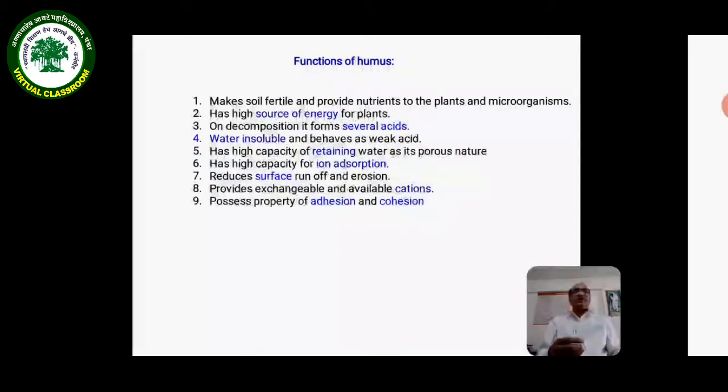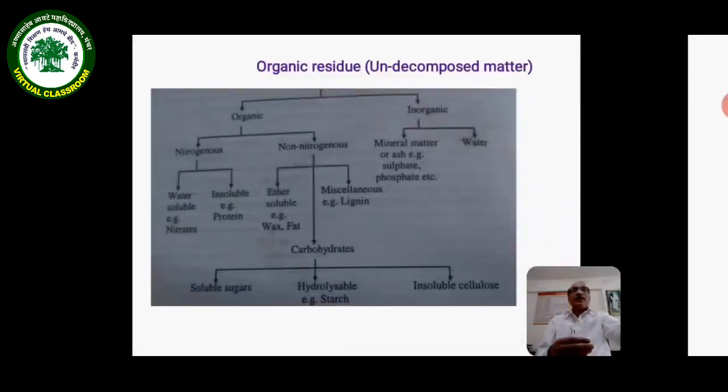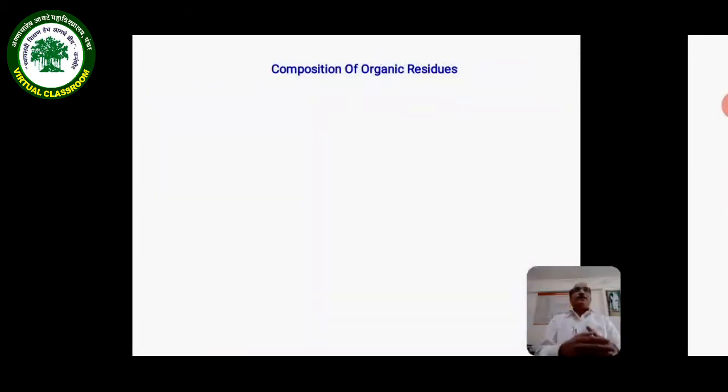After knowing the functions of humus, we must understand the composition of organic residue. The makeup of green plants is around 32% carbon, 75% water, 1% hydrogen, and 80% oxygen.